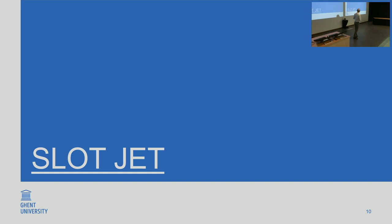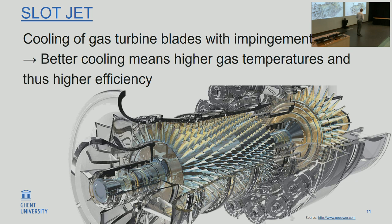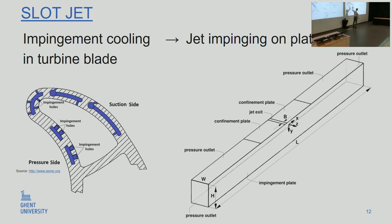Let's look at three cases where we did large eddy simulation. The first one is a slot jet — a very academic case that comes from the gas turbine industry. Gas turbines are used as aircraft engines and for power generation. The turbine blades are subjected to very high temperatures, so you need to cool them or they just melt off. Part of the cooling is done with impingement: at the inside of the blade there's cool air, and it impinges on the outer wall of the turbine blades to cool them.